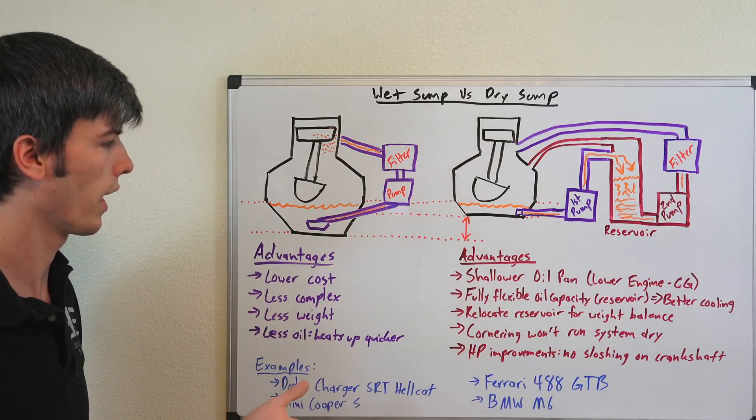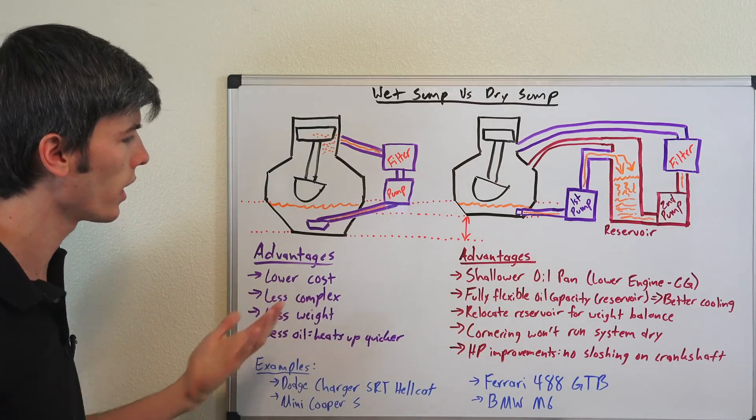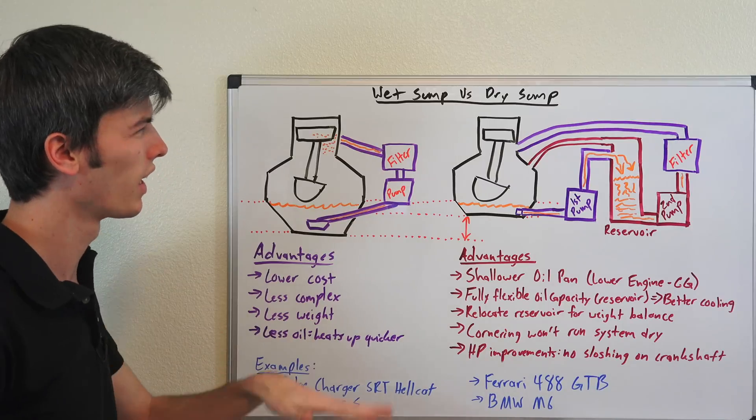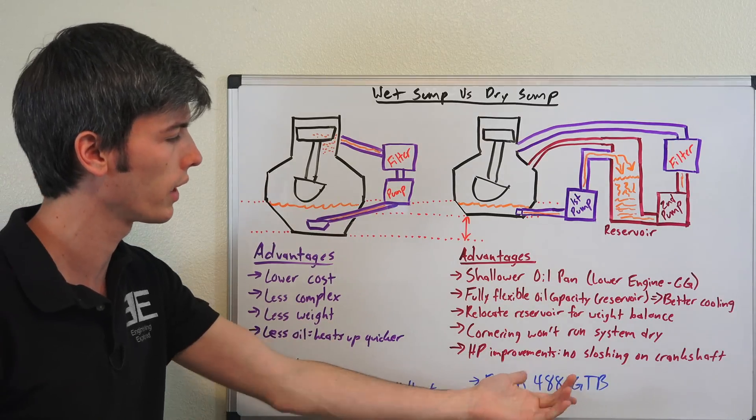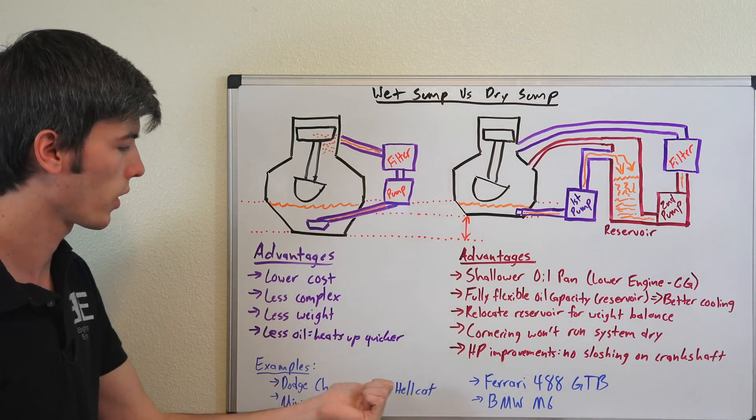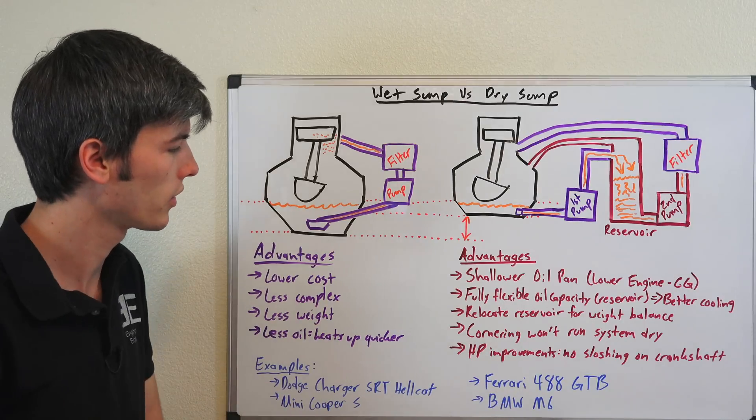So here we have a few examples of some different vehicles which use either dry or wet sump. Wet sump is by far the most common - most vehicles will have this. And then more track-friendly vehicles may end up using dry sump. Ferrari 488 GTB, BMW M6 are some examples with dry. Some examples with wet: Dodge Charger SRT Hellcat and Mini Cooper S.